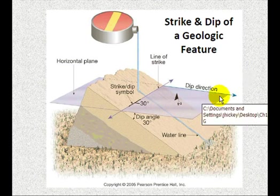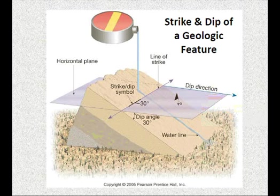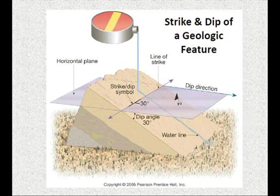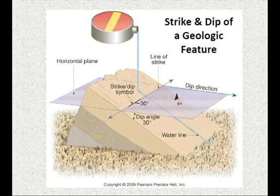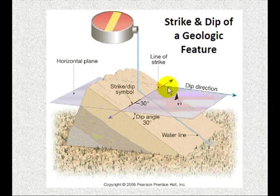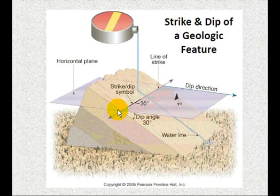In order to get a better sense of what the strike is, if you think about this horizontal plane here, think about what would happen if we flooded this area up to the level of this plane with water, so that everything below that plane was now basically just a big lake. This is the surface of that water body. Where that water intersects the top of this bed, that's referred to as the line of strike.